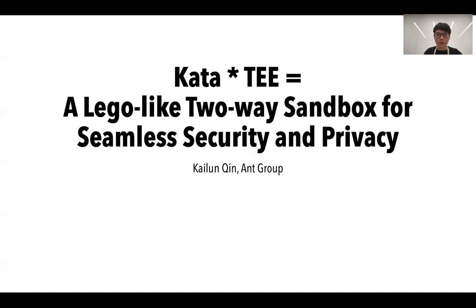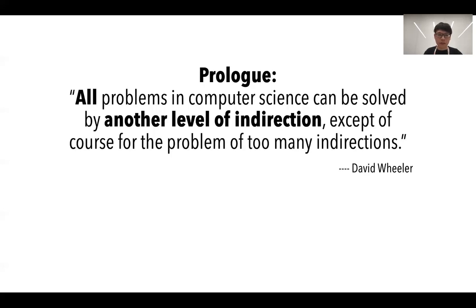Hello everyone, welcome to this session. My name is Kai Lunqing and I'm from Ant Group. Today my topic is Kata x TEE, a Lego-like two-way sandbox for seamless security and privacy. Let's start with this famous saying by David Wheeler, a well-known computer scientist: all problems in computer science can be solved by another level of indirection, except for the problem of too many indirections. Let's keep this in mind and see how this is another level of indirection to help with security and privacy in Kata containers.